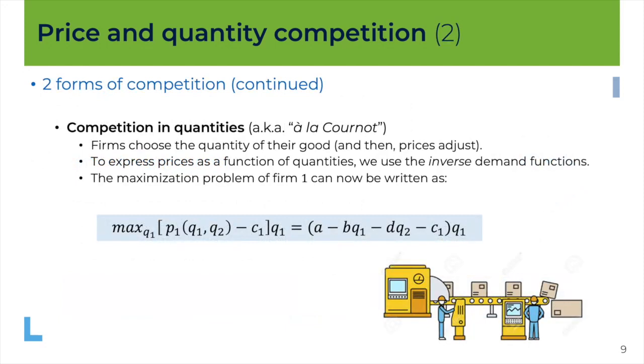Now if you want to consider competition in quantities, so that would be another game where instead of choosing prices, firms choose the quantity they will put on the market. And once these quantities are decided, then the price at which they are sold will adjust.